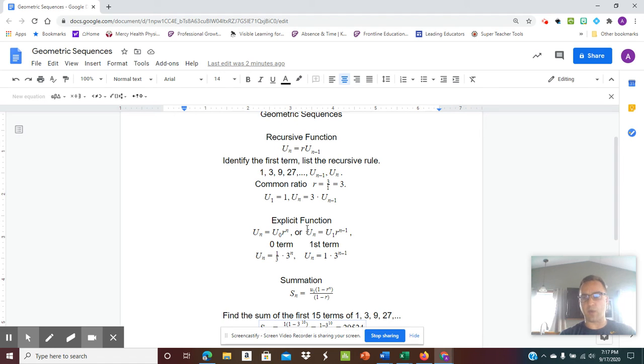And if I wanted to write the explicit function based on the first term, you could go u sub n equals u sub 1, the first term, times r to the n minus 1. So we would say u sub n, the value of the nth term, is 1 times 3 to the n minus 1. And we even discussed in class, if I wanted to write from the third term, we could say u sub n equals 9 times 3 to the n minus 3.